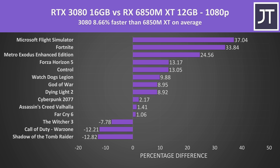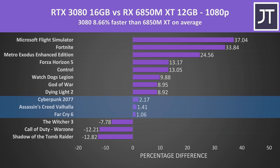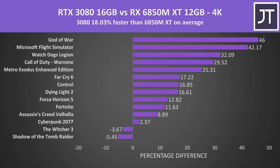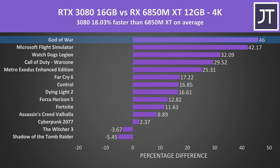On average over all 14 games at 1080p, the RTX 3080 was nearly 9% faster than the RX 6850M XT. The Radeon GPU was only clearly ahead in three titles while another three had no major difference, and the rest had clear gains with the 3080. Stepping up to 1440p, the RTX 3080 was now reaching 11% higher average FPS. At 4K the 3080 was reaching an 18% higher average FPS on average, with only two older titles doing better on the 6850M XT. Best case we're seeing nearly a 50% boost with the 3080.